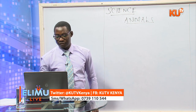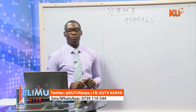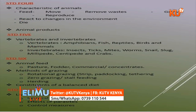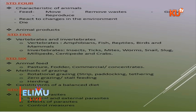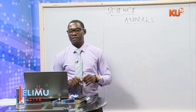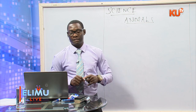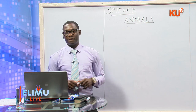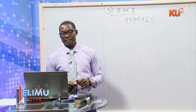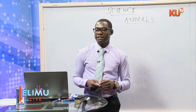In standard 5, we talk about classification of animals — looking at the common feature of a backbone. Animals that have a backbone are called vertebrates, and animals without a backbone are called invertebrates. Invertebrates include insects, spiders, snails, slugs, millipedes, centipedes, and others.